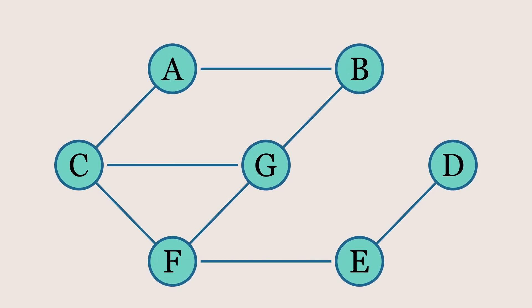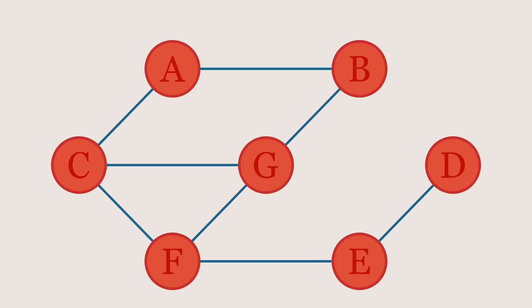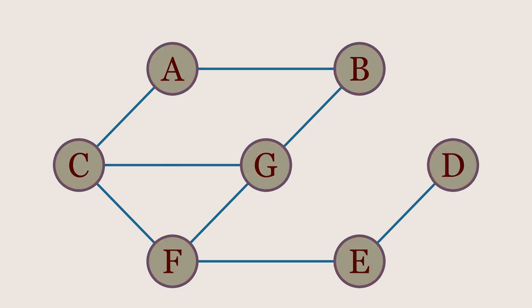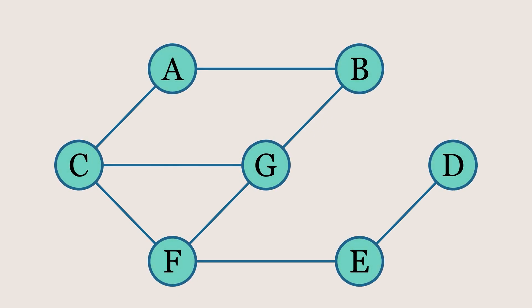A graph is a data structure made up of nodes, also known as vertices, and edges, which are the connections between those nodes. Think of it like a network, where each node represents an object or entity, and each edge represents the relationship or connection between them.